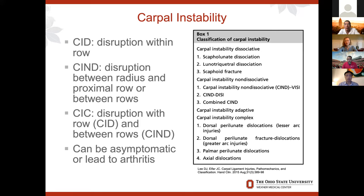This covers what will be discussed over the rest of the hour. We have carpal instability dissociative and carpal instability non-dissociative. To simplify: dissociative is disruption within the row — scapholunate ligament disruption, lunotriquetral disruption, or even a scaphoid fracture, which also disrupts that row. Non-dissociative carpal instability is between the radius and the proximal row, or between the proximal and distal rows — mid-carpal instability. And then there is carpal instability complex, which is a combination of both.